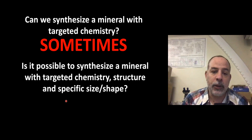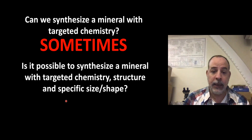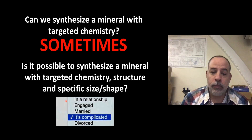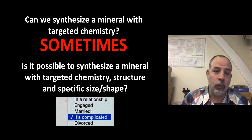The billion-dollar question is: is it possible to synthesize a mineral with targeted chemistry, a targeted structure, and specific size and shape? The answer is: it's complicated, and it can be very complicated. For some minerals we know how to; for some others, we don't even know how to produce any solid. It's very easy to produce calcite with specific chemistry, structure, and size and shape. But if you want to work with more complex or less common minerals, that can be very complicated.